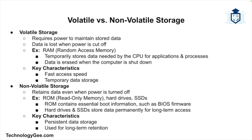Let's start by comparing volatile and non-volatile storage. Volatile storage is the type of memory that requires power to maintain the stored information — once the power is cut off, the data is lost. An example is RAM, or random access memory, the most common form of volatile storage. When you turn on your computer, RAM stores data temporarily that the CPU needs for running applications or performing calculations.